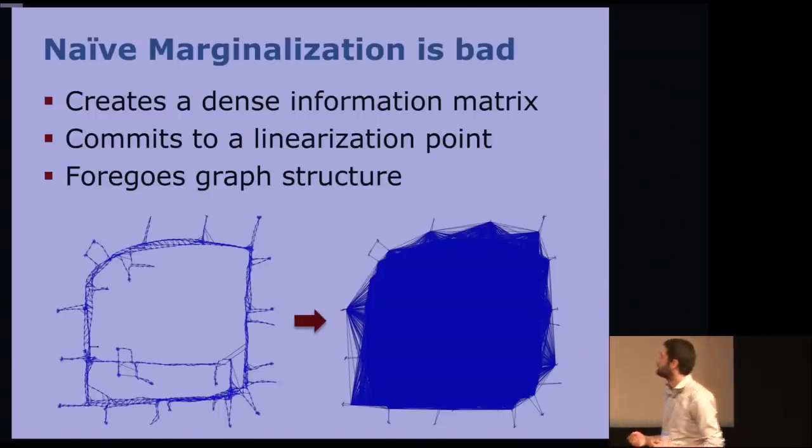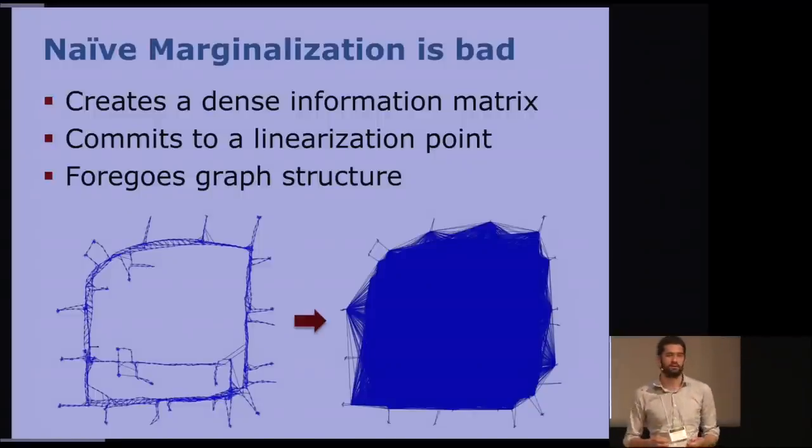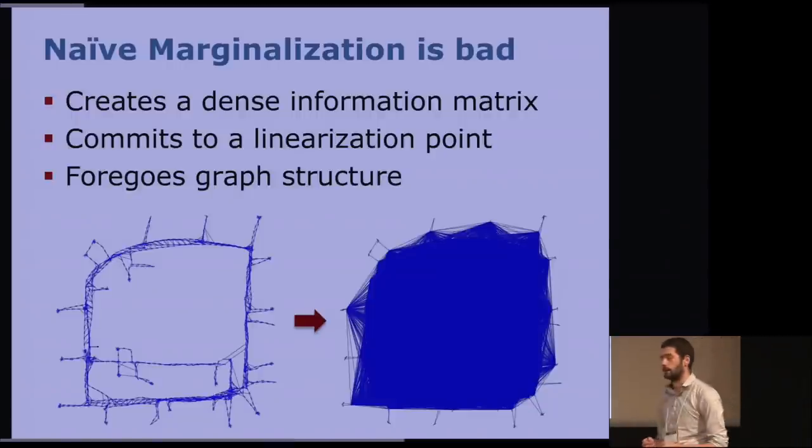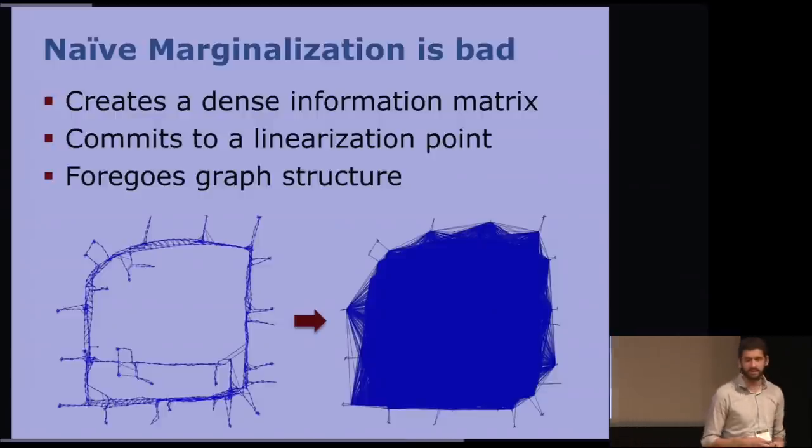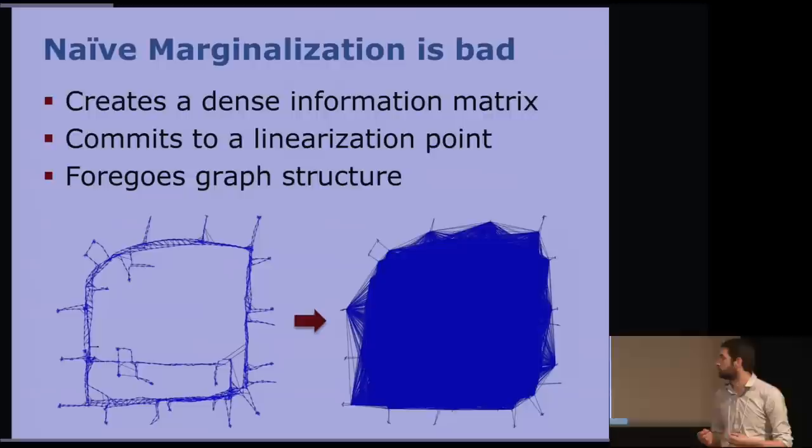So, how do you do exactly that? One particular way you could approach this problem is to marginalize some nodes. Unfortunately, this has the small problem that you need to compute a Schur complement, which will give you a dense information matrix. And since the Schur complement works on a linear approximation, you will also commit to a particular linearization point, which might not necessarily be the final one. Furthermore, since you now have an information matrix and not an actual graph any longer, it is not actually intuitive how to go back to the factor graph structure.